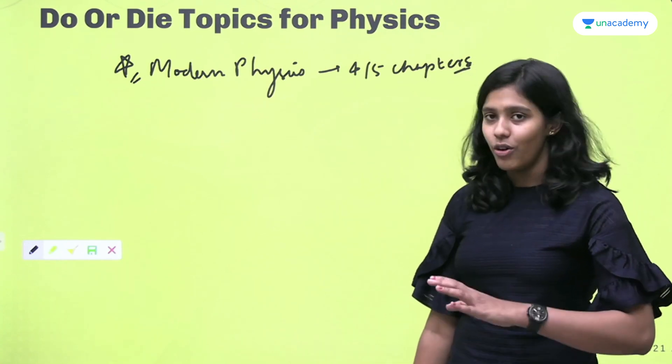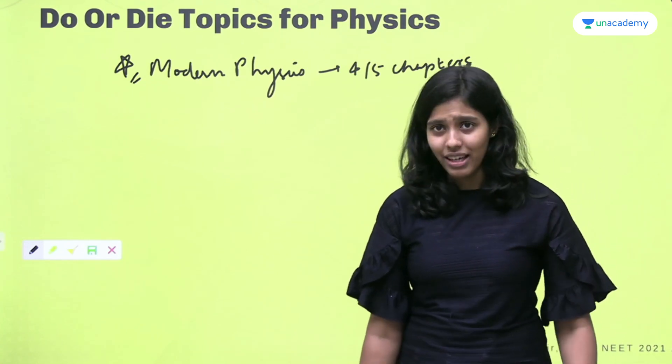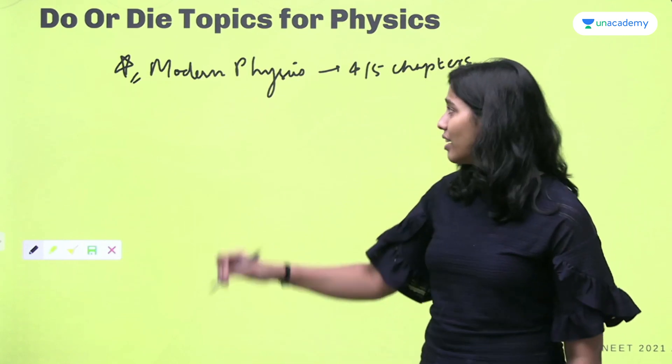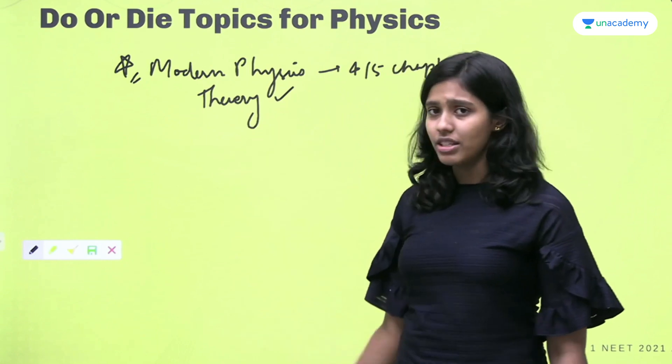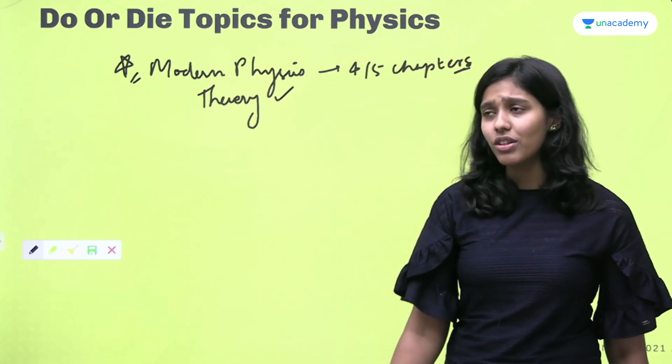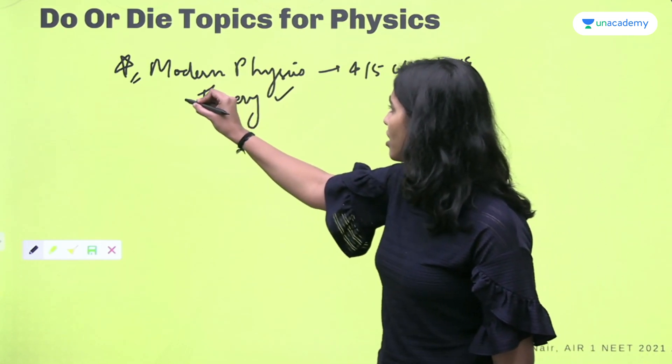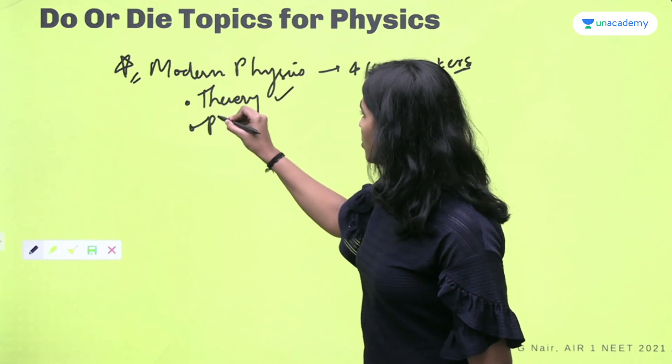So modern physics, very very important. You should read the NCERT several times. The theory must be done. Theory questions are a way to avoid calculations and scoring easy marks, so theory must be done for modern physics. Secondly, all PYQs should be done.